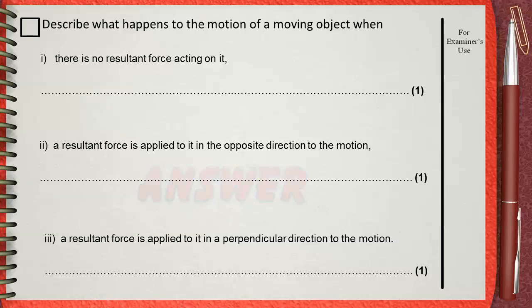Before we answer this question, we must pay attention to something: the question is talking about an object that is already moving. Part I asks what will happen to this moving object — the object is not at rest. If there is no resultant force acting on it, this object will continue moving with constant speed and no changes will happen to its motion.